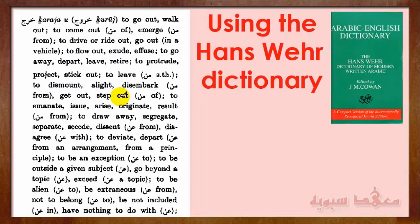Also, من is used with the meaning of 'of' — to emanate, to issue, to arise, to originate, to result. Now here is another meaning: to draw away, to segregate, to separate, meaning to depart or to leave. And the حرف جر عن is used — خرج عن.